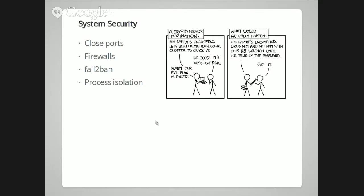Firewalls are a network technique that blocks traffic from certain areas and controls where access occurs. There are a couple of tools you'll want to know about. Nmap is a port scanning tool that goes through and scans all of the ports on a system and looks for any that are open and shouldn't be. Don't use it on systems that aren't yours or that you don't have permission to use it on.